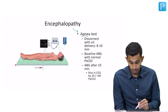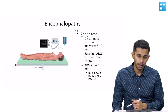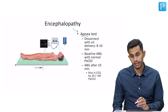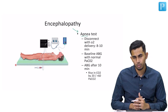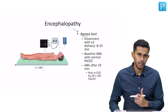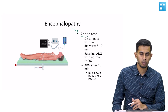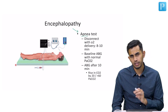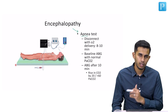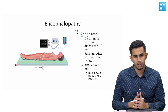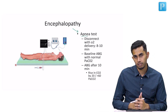In the apnea test, we first ensure there are no confounders. Then we obtain a baseline arterial blood gas where PaCO2 is between 35 to 45. Once the baseline ABG is obtained, we disconnect the patient from the ventilator and supply oxygen through a tube placed at the carina. This is done for around 8 to 10 minutes, during which we look for any breathing effort and any motor response.